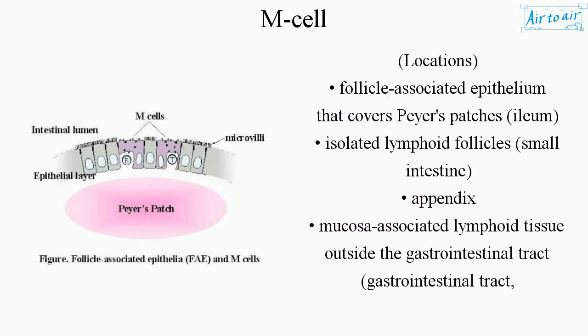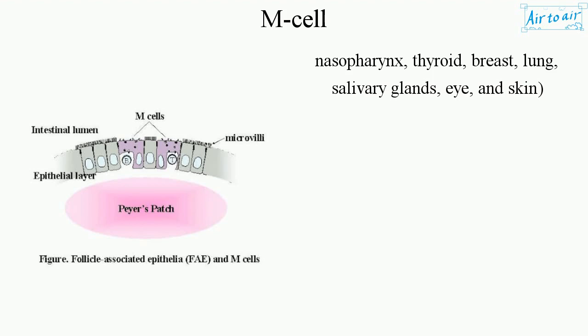Locations: follicle-associated epithelium covering Peyer's patches in the ileum, isolated lymphoid follicles of the small intestine, appendix, and mucosa-associated lymphoid tissue (MALT) outside the gastrointestinal tract — including the nasopharynx, thyroid, breast, lung, salivary glands, eye, and skin.